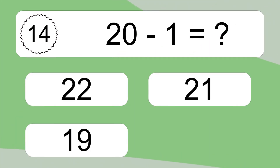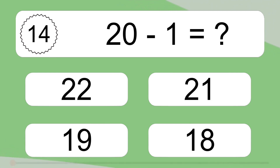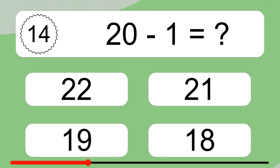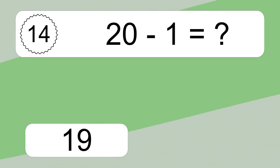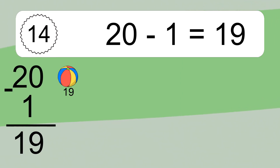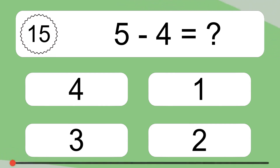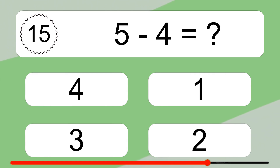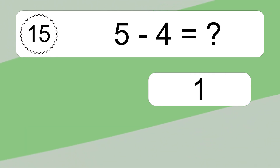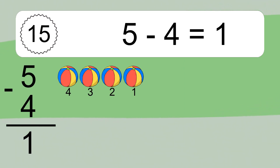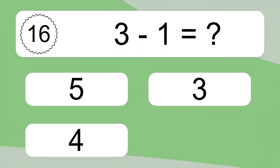20 minus 1 equals what? 20 minus 1 equals 19. Let's count it: 19. 5 minus 4 equals what? 5 minus 4 equals 1. Let's count it: 4, 3, 2, 1.